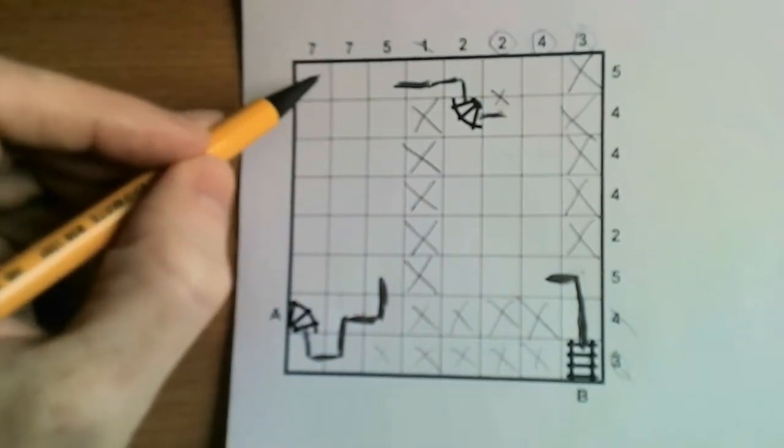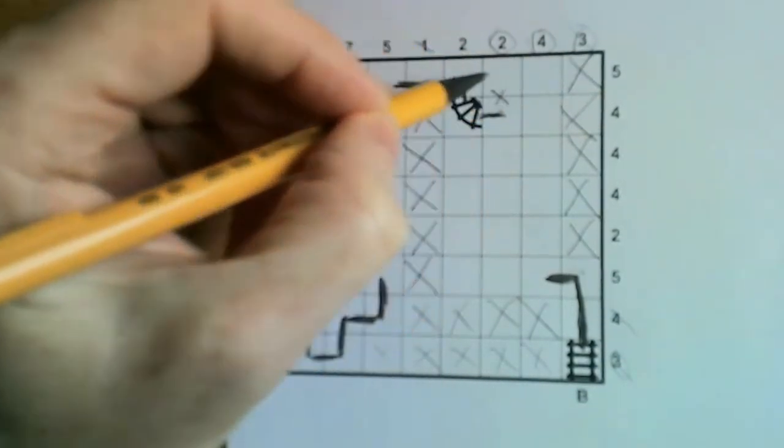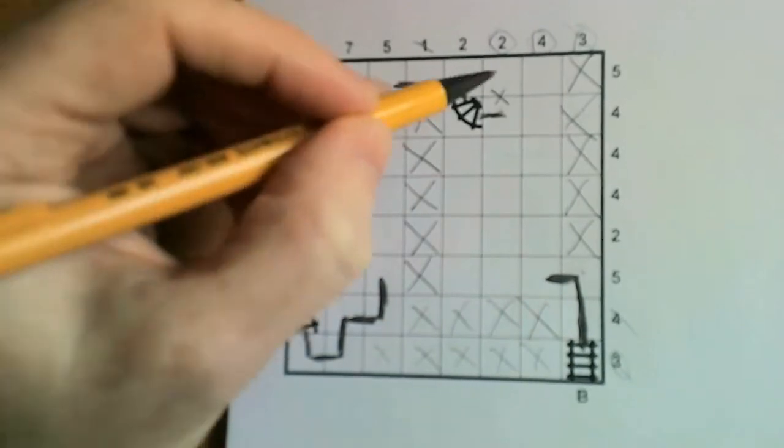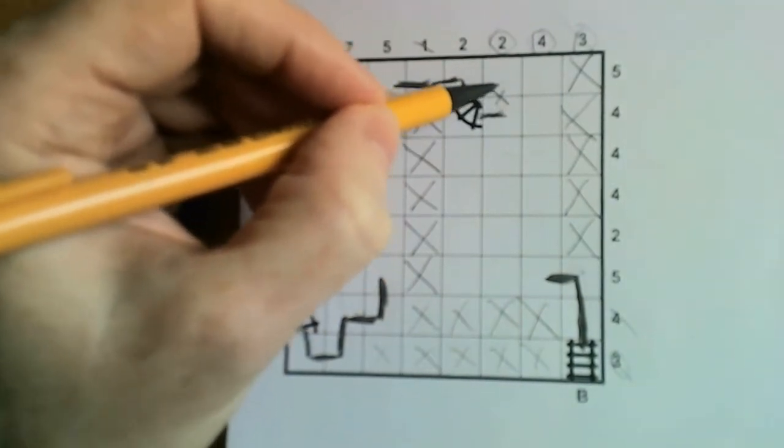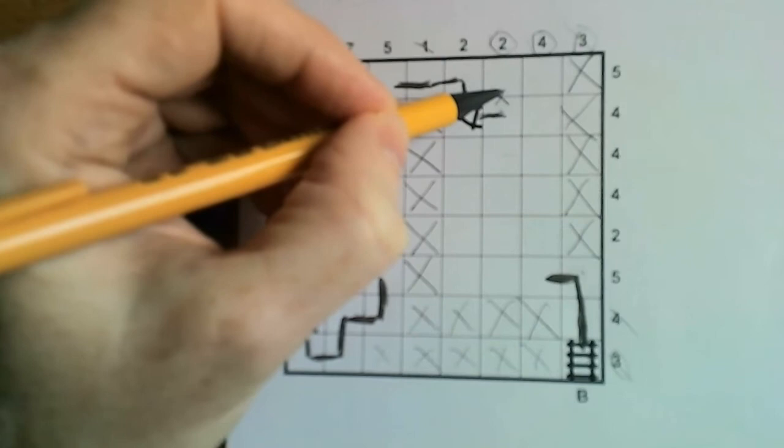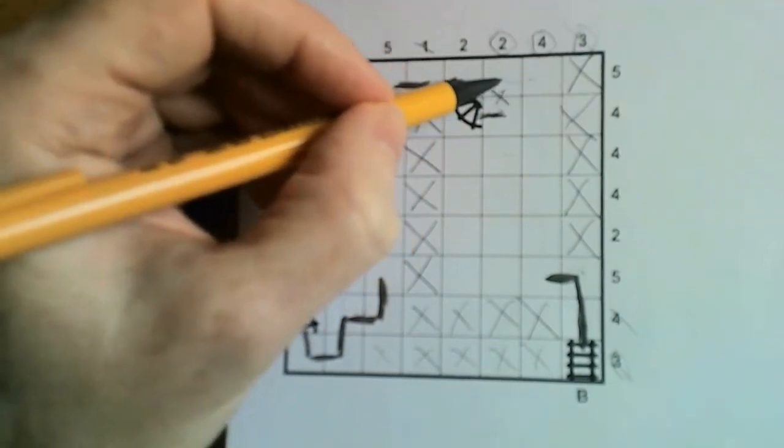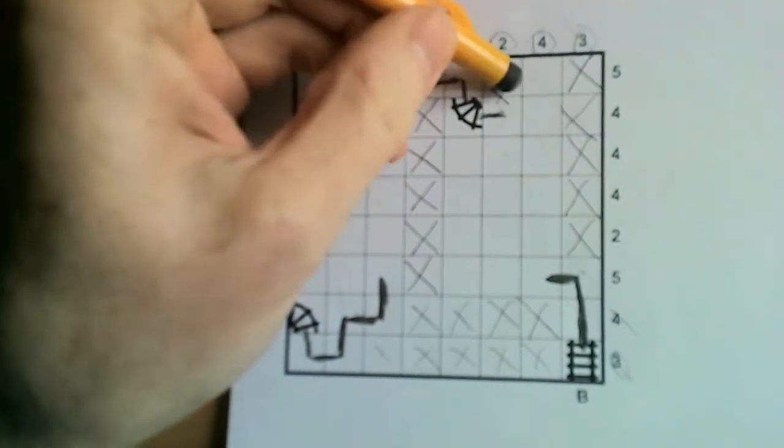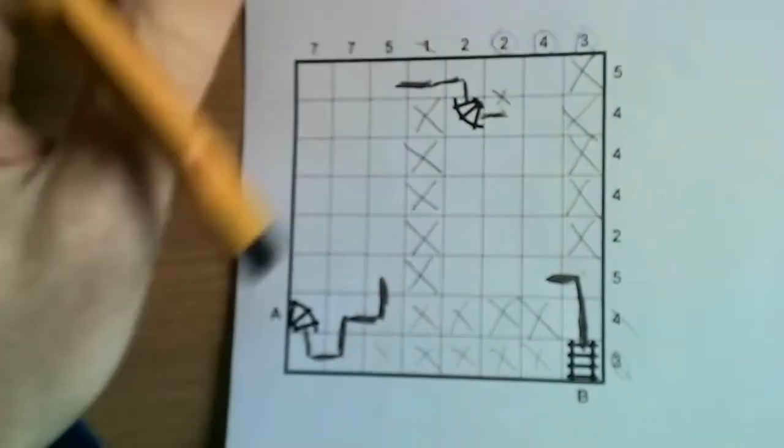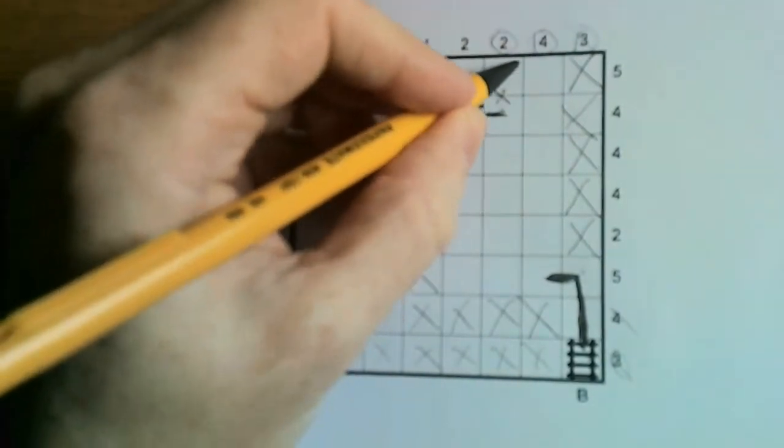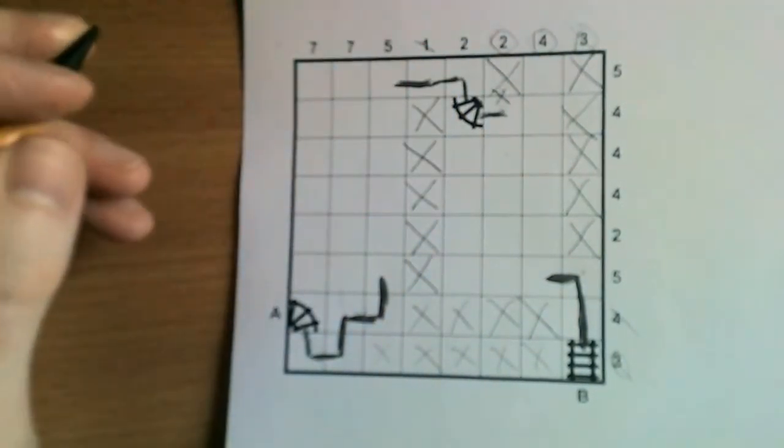Now we know we have five squares to use in this row. And we've just shown this can't come up there. Therefore this square is now isolated. Because if we came in there we couldn't then come out. And you must be able to move in and out of every square, unless it's the entrance or exit.